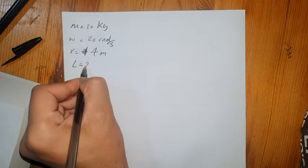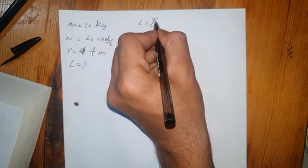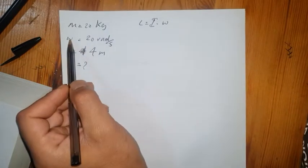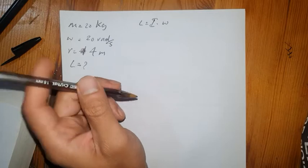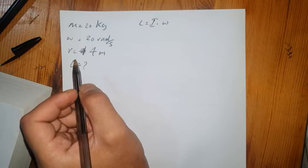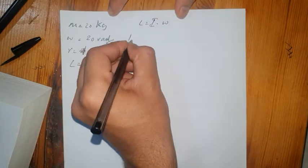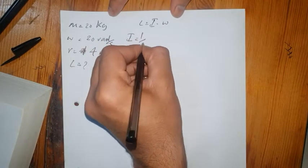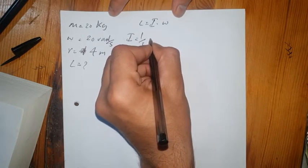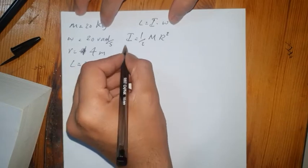The formula for angular momentum is L equals I times omega. Here we have omega, but we don't have I directly — we have mass and radius instead. So with mass and radius we can find I. To find I, we need the formula: I equals one-half times mass times radius squared.